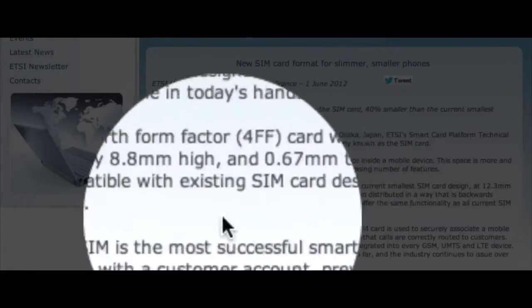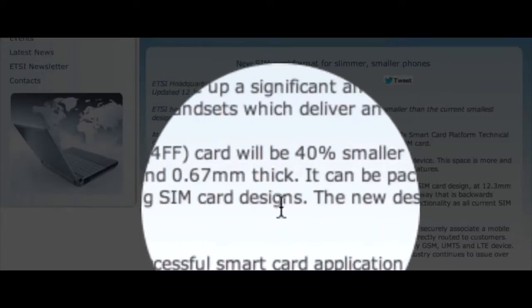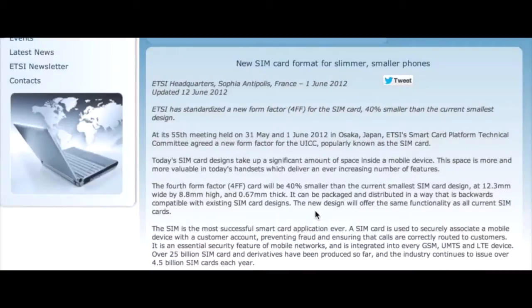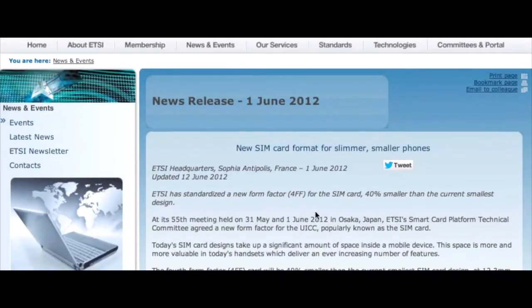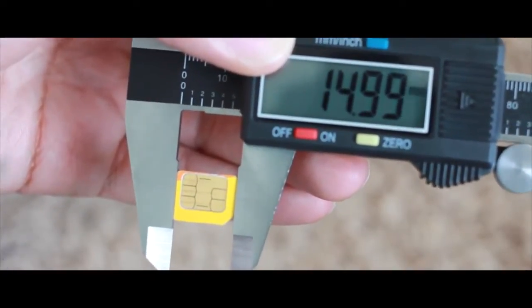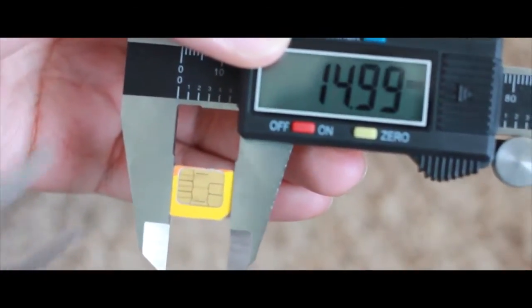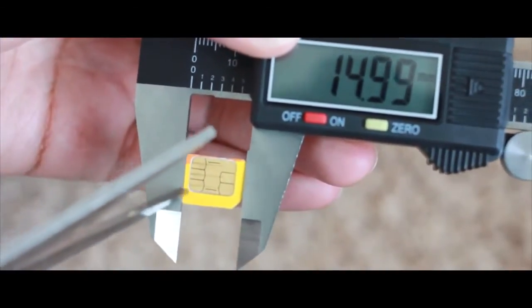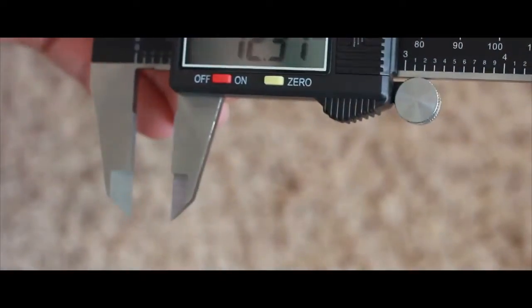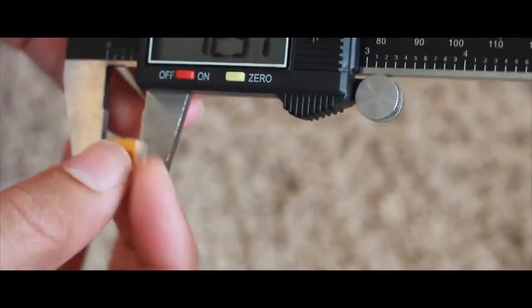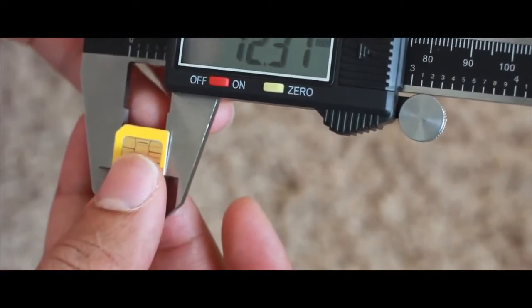The new design will offer the same functionality, so that's very promising. Basically if we cut this down, it might work in our new iPhone 5. You can see here the height at 14.99 millimeters, so we need to cut that down. We need to cut the excess edges to meet the standards set out by the ETSI for the nano SIM. It needs to be about 12.3 millimeters.